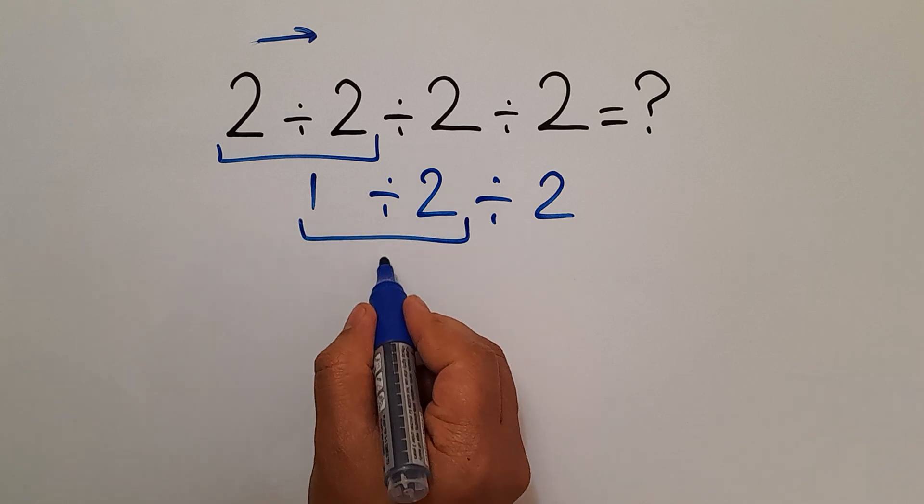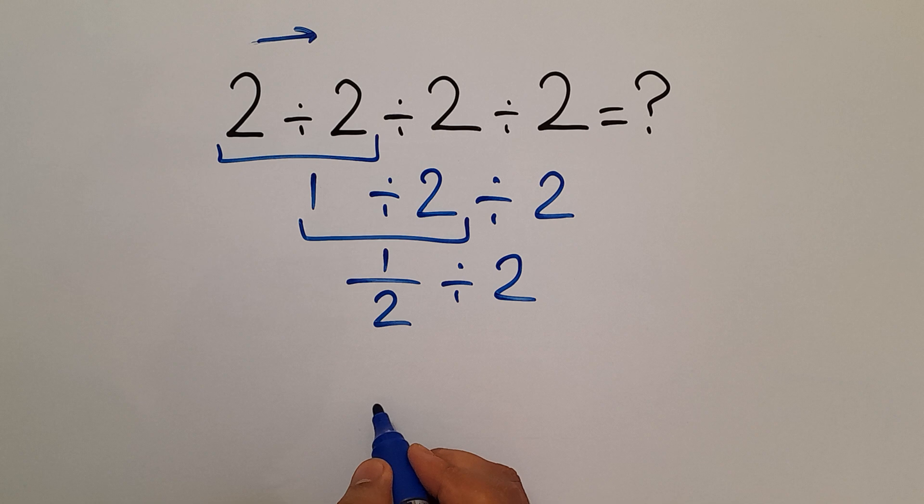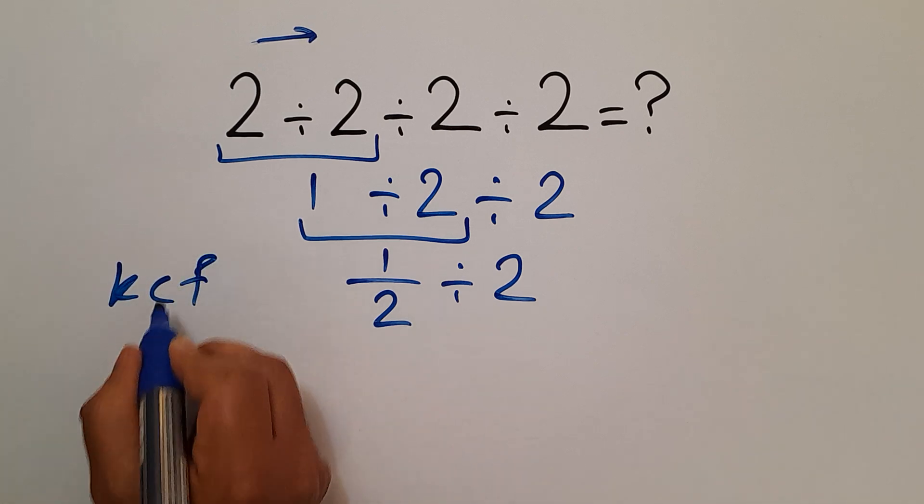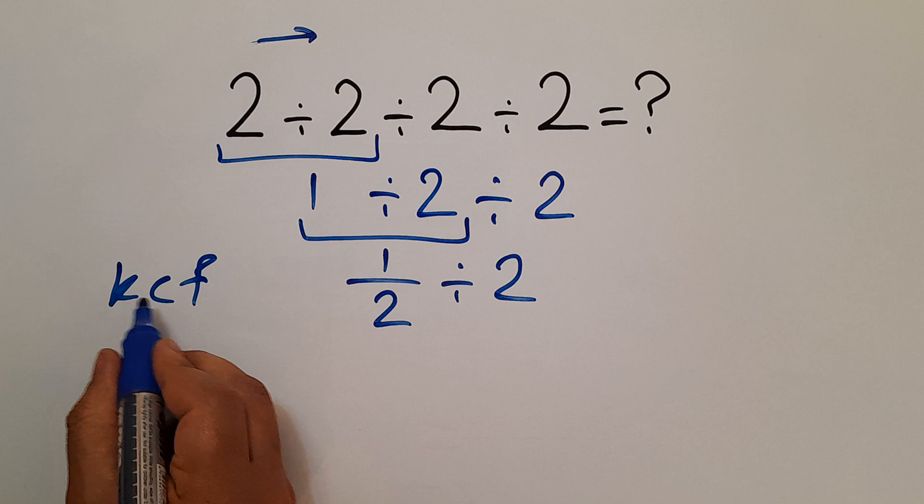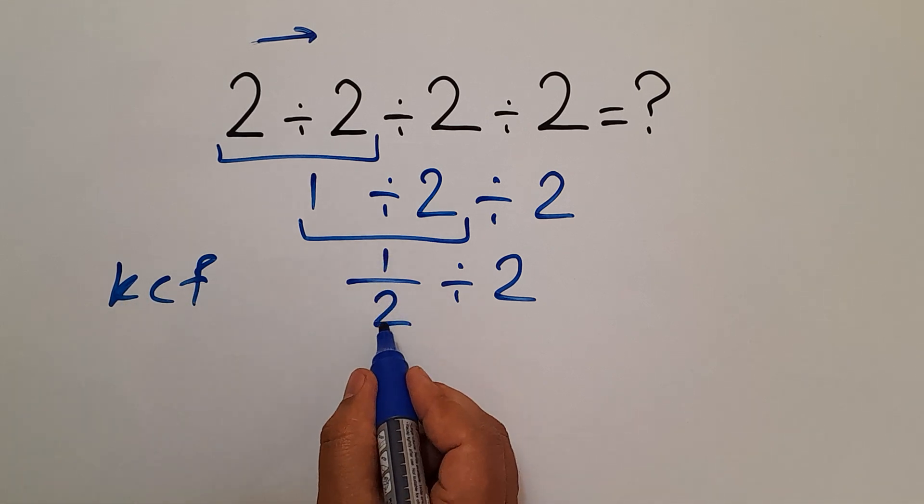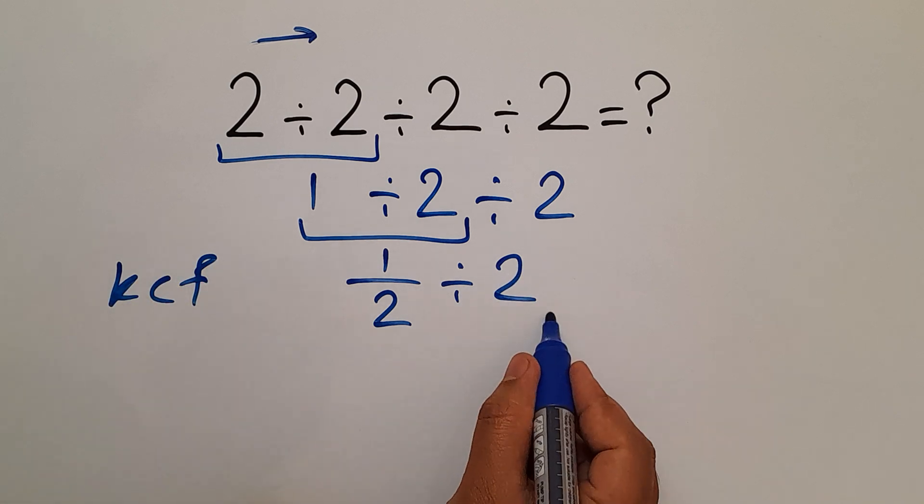equals 1 over 2, then divided by 2. Here according to the KCF rule, K stands for keep, C stands for change, and F stands for flip. 1 over 2 divided by 2 according to this rule can be written